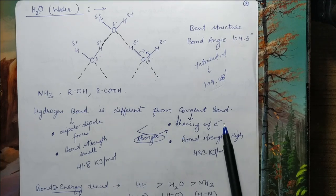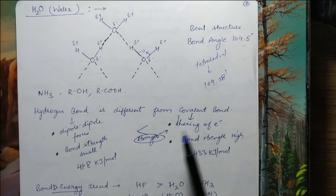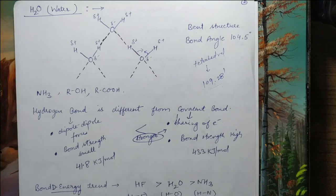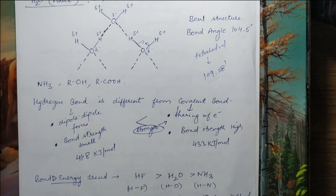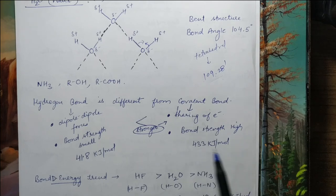Covalent bonds are stronger in comparison to hydrogen bonds. If we talk about the actual strength of hydrogen bonding, it falls in between Van der Waal forces and covalent bonds — Van der Waal forces are weaker, but covalent bonds are stronger. The value of bond strength for a covalent bond (H–F) is 433 kJ per mole, while a hydrogen bond is approximately 41.8 kJ per mole. So naturally the covalent bond is stronger. The bond dissociation energy trend for HF (H–F), Water (H–O), and Ammonia (H–N) can be compared accordingly.